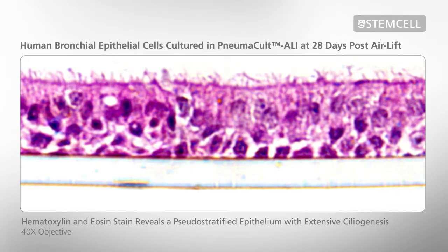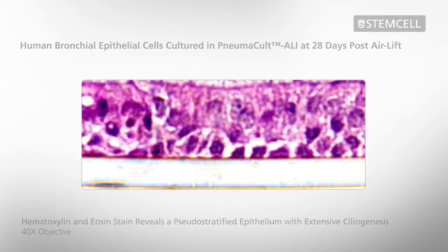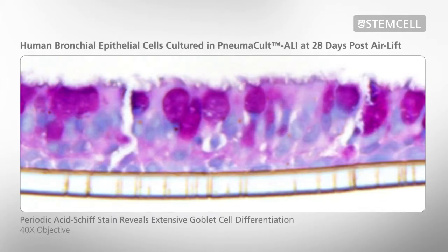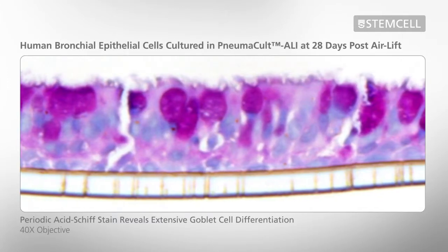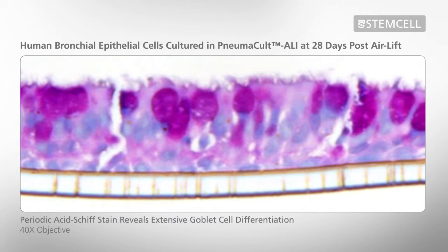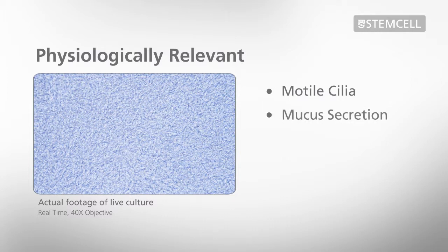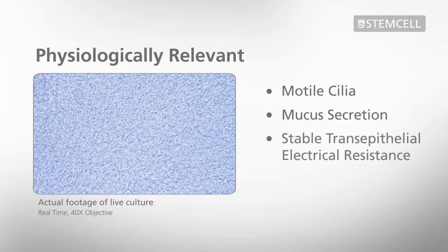Cells cultured in Pneumacol ALI undergo extensive mucociliary differentiation to form a pseudo stratified epithelium that closely resembles the human airway. Key features include the presence of highly motile cilia, production and secretion of mucus, and the development of good barrier function with stable transepithelial electrical resistance.